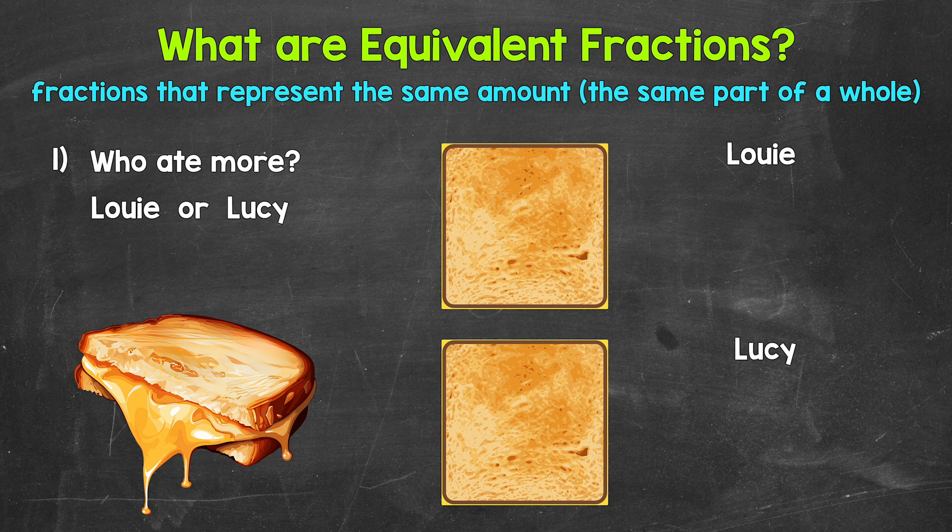Simply put, equivalent fractions are fractions that represent the same amount — they represent the same part of a whole. So basically, we can have fractions that have different numerators and denominators, different top numbers and bottom numbers, but the fractions can still represent the same amount, the same part of a whole. In other words, equivalent fractions represent the same value.